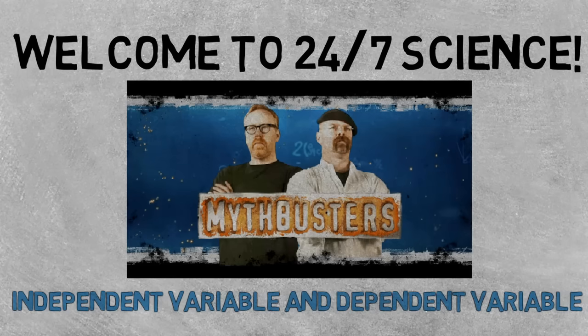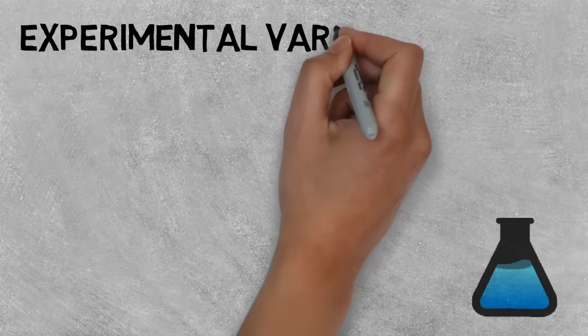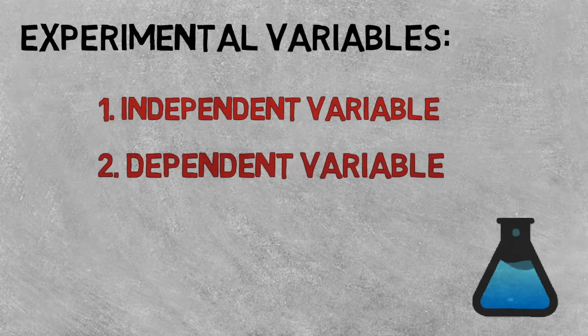First let's get some terms clear. There are two main types of variables in an experiment, the independent variable and the dependent variable.